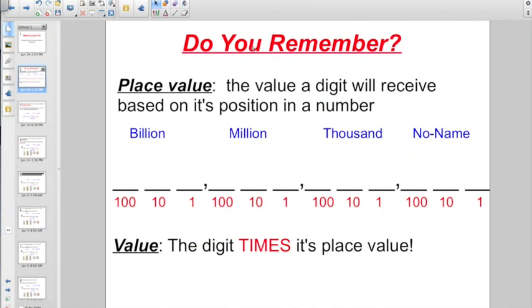Before we dive in too much further, just want to say, do you remember? I still have some people struggling on basic place value. So remember, what we know so far, the first three digits, we call the no-name group: ones, tens, hundreds.